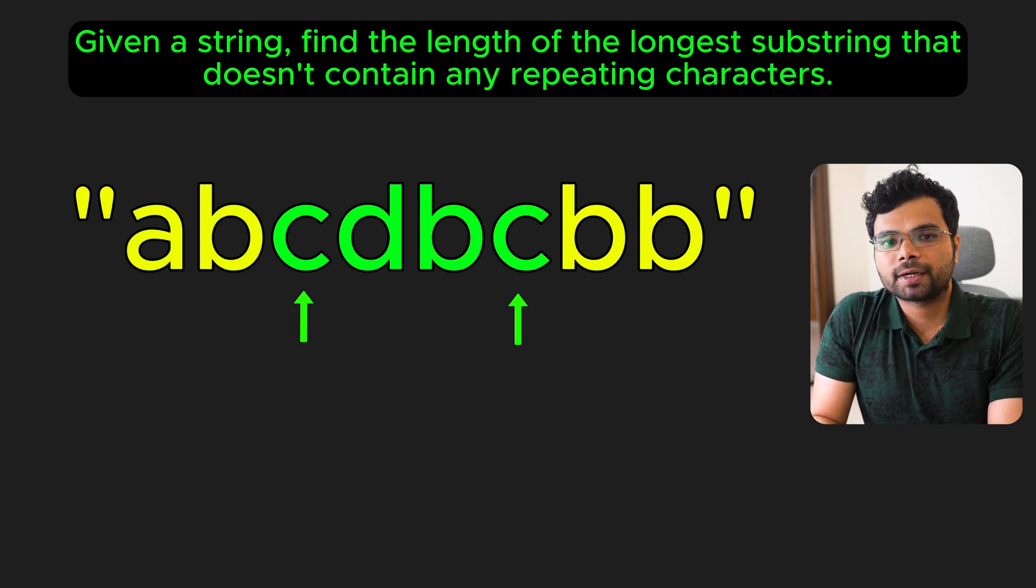Or it contains a duplicate. In this scenario, we should shrink the window by advancing the left pointer until it no longer contains a duplicate. To efficiently check for duplicate characters, we use a hash set.